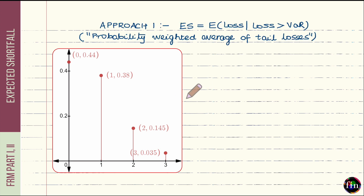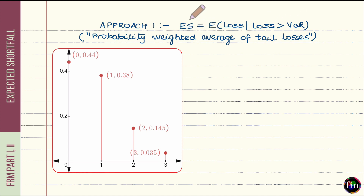Let us begin with the first approach. In this approach I will be using the formula that defines expected shortfall as a conditional expectation — the expected value of the loss given the loss is greater than VaR, where VaR is calculated at the same confidence level. So expected shortfall is interpreted as a probability-weighted average of tail losses, focusing only on losses sitting in the right tail, those greater than the VaR.